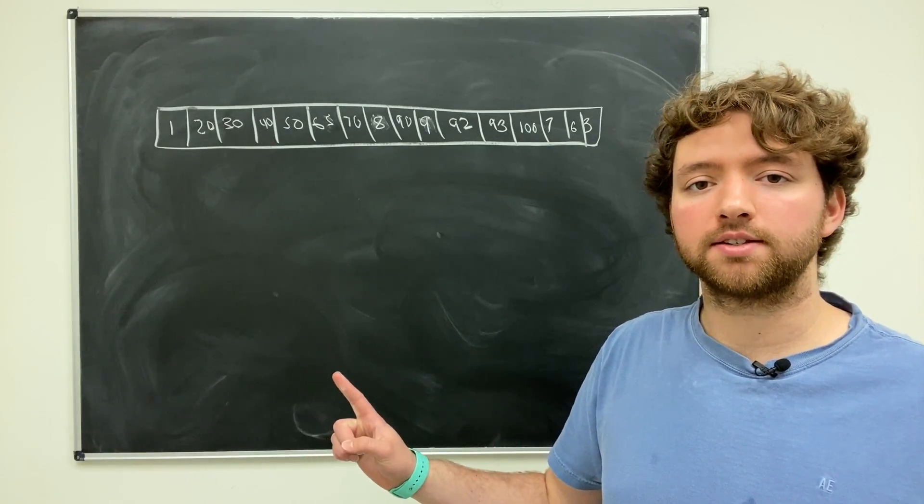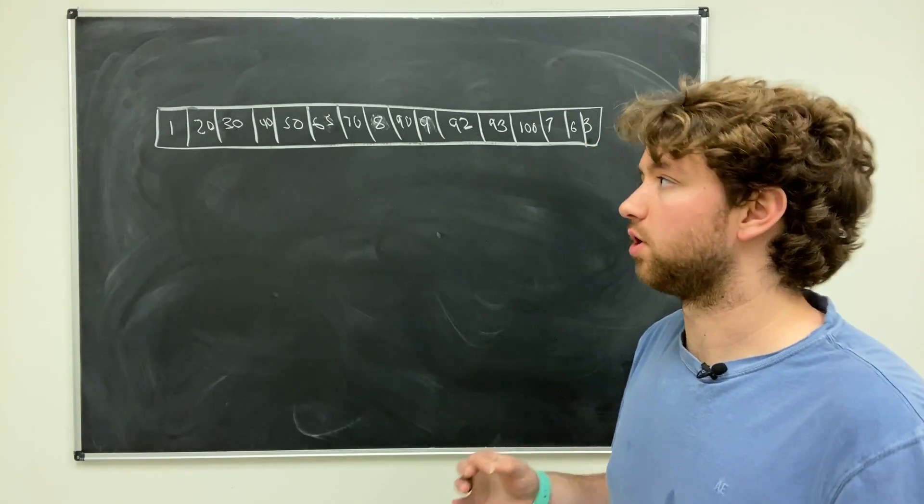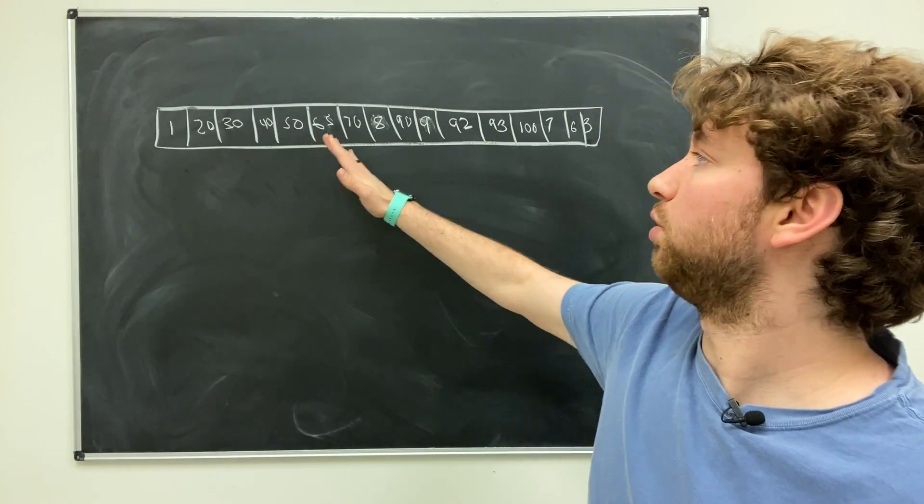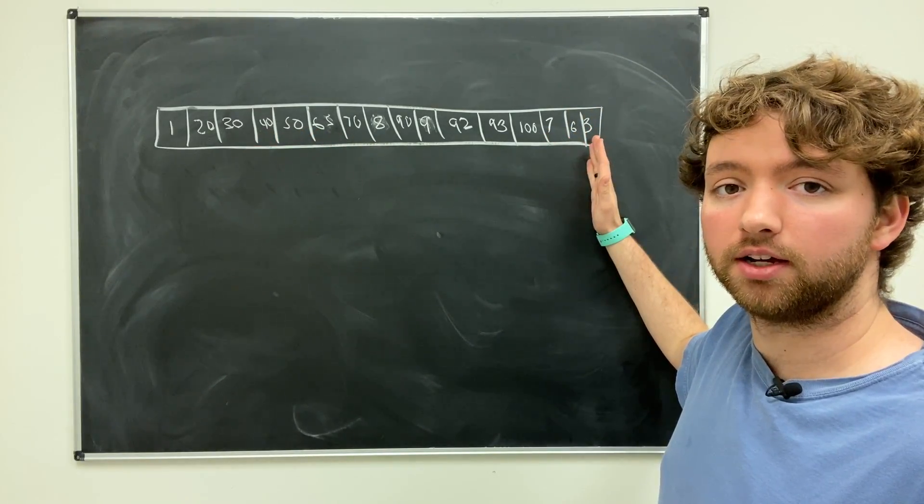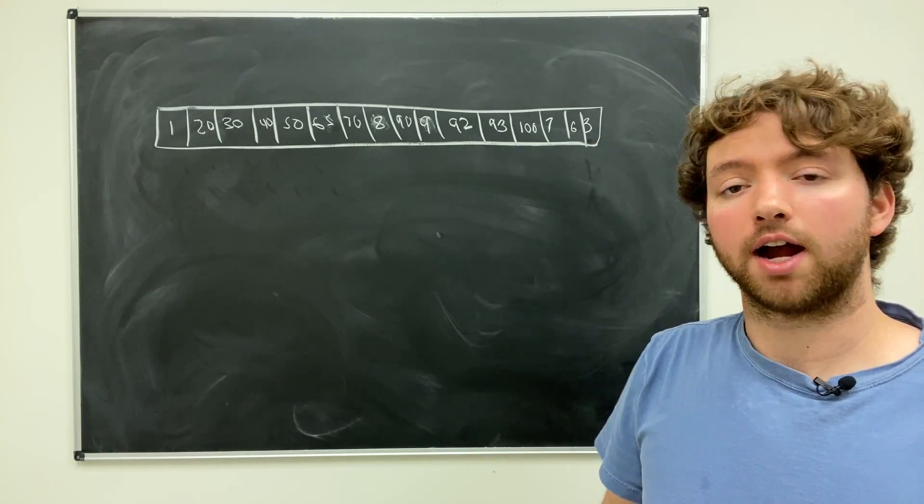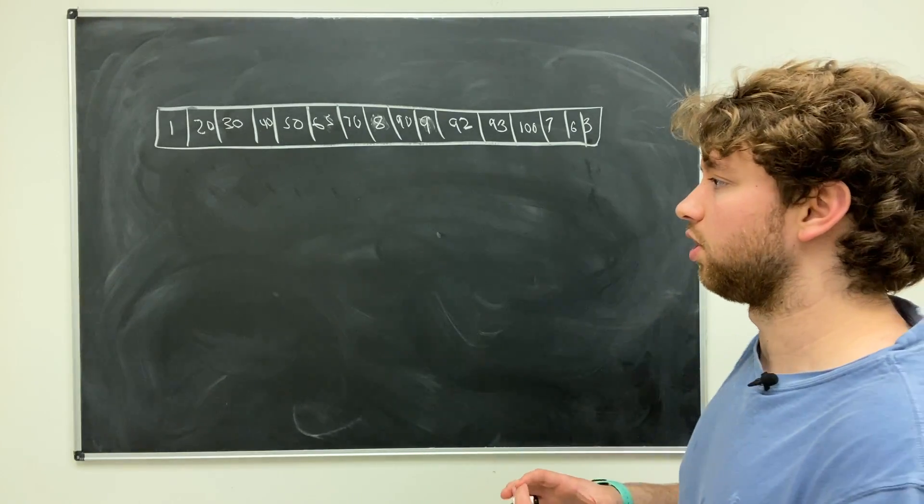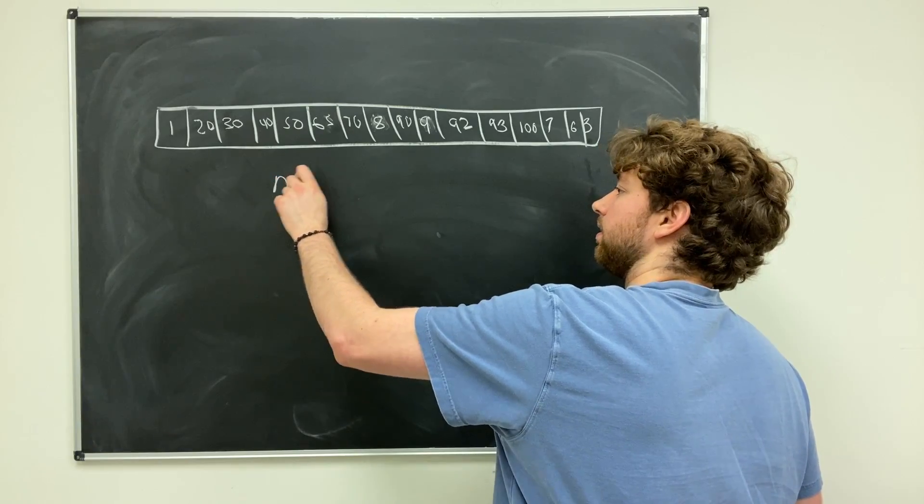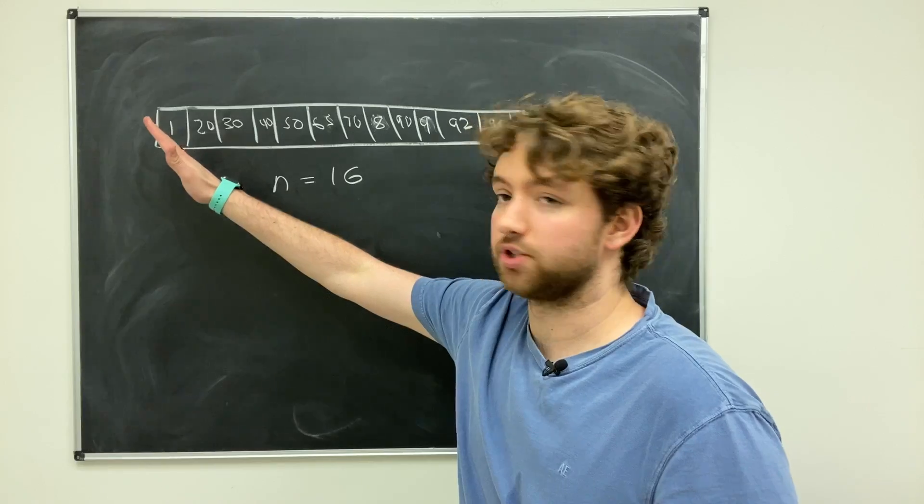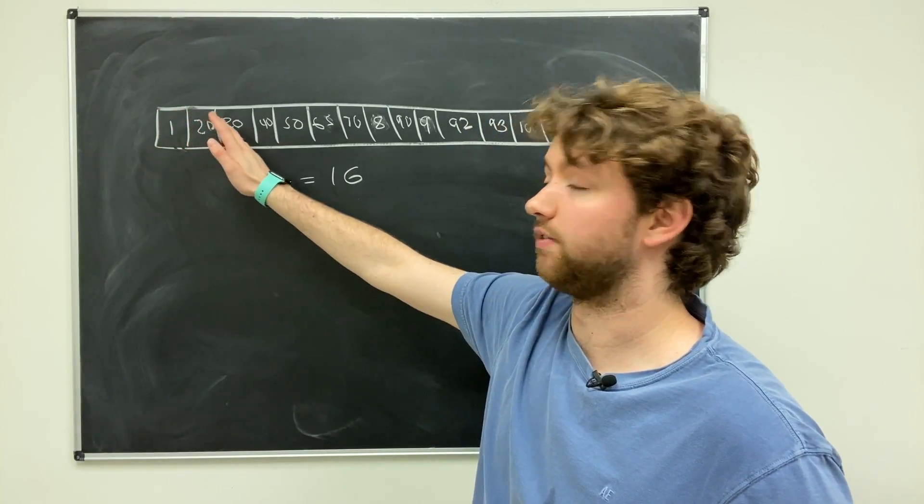So now let's think worst case scenario. You have to find the number three here. Well, an algorithm is going to go through every single element, checking to see if it's three, and it's going to get to that final spot here and finally find the value three. So this is said to be a linear algorithm because worst case scenario, it takes the entire list length. So if N or the size is 16, it basically takes 16 operations, which an operation in this case would be checking to see if the value is whatever value we're looking for.